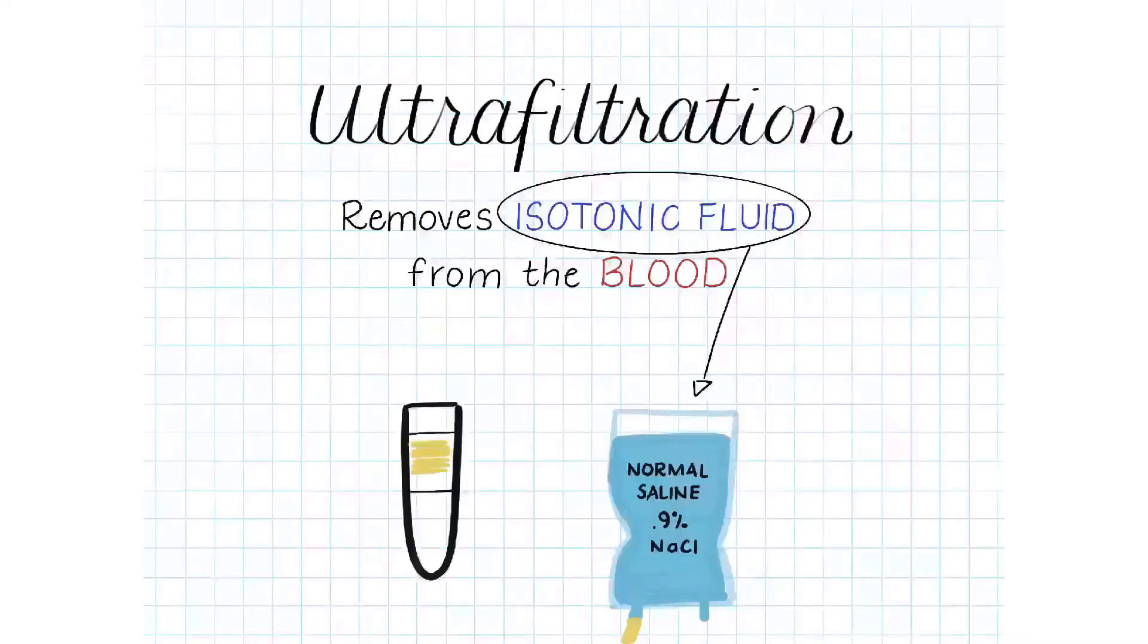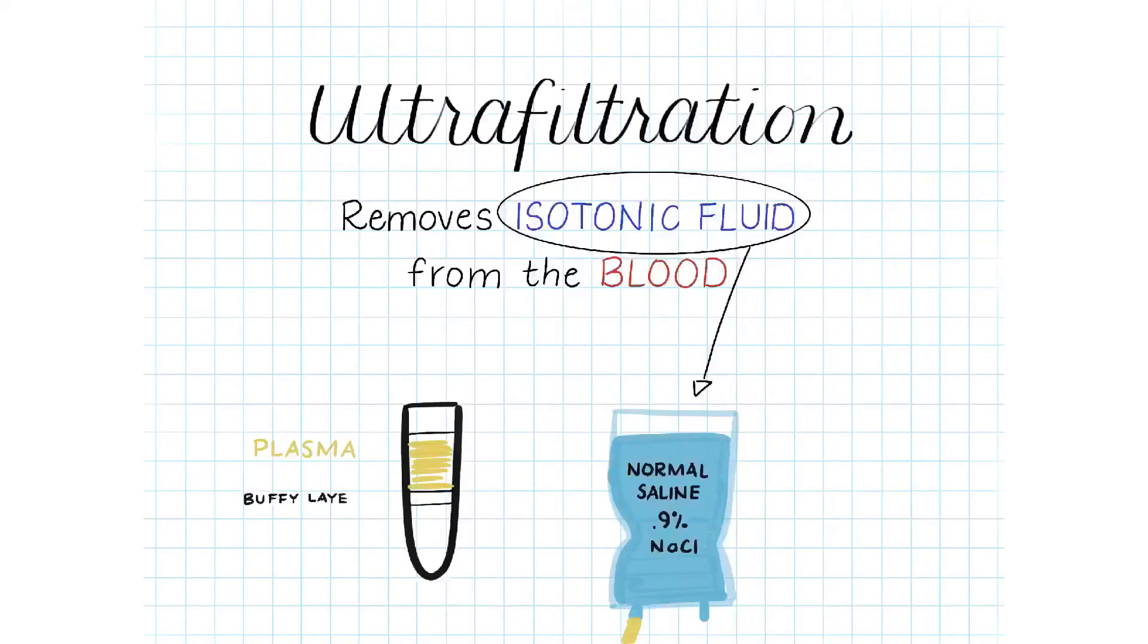If you were to take a test tube of blood and break it up into its components, you would find that a portion of the blood is plasma, which is this fluid similar to normal saline. There's a buffy layer, which contains the white blood cells, and the remainder is your red blood cells, which comprise about 45% of your blood.